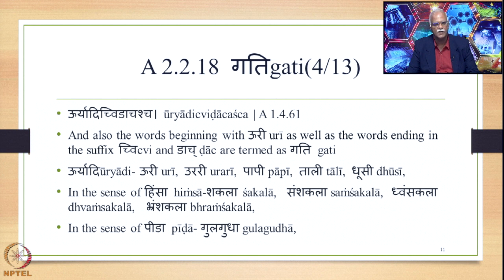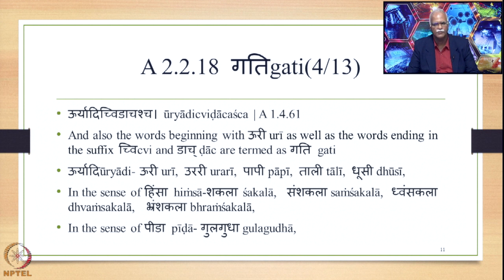Now let us study more Sutras in the section that explains the Gati Saudhanya. The first such Sutra is Uriyadi Chvidachascha 1461. It means: also the words beginning with Uri, as well as words ending in the suffix Chvi and Daach, are termed Gati. The words in the Uriyadi list are the following.